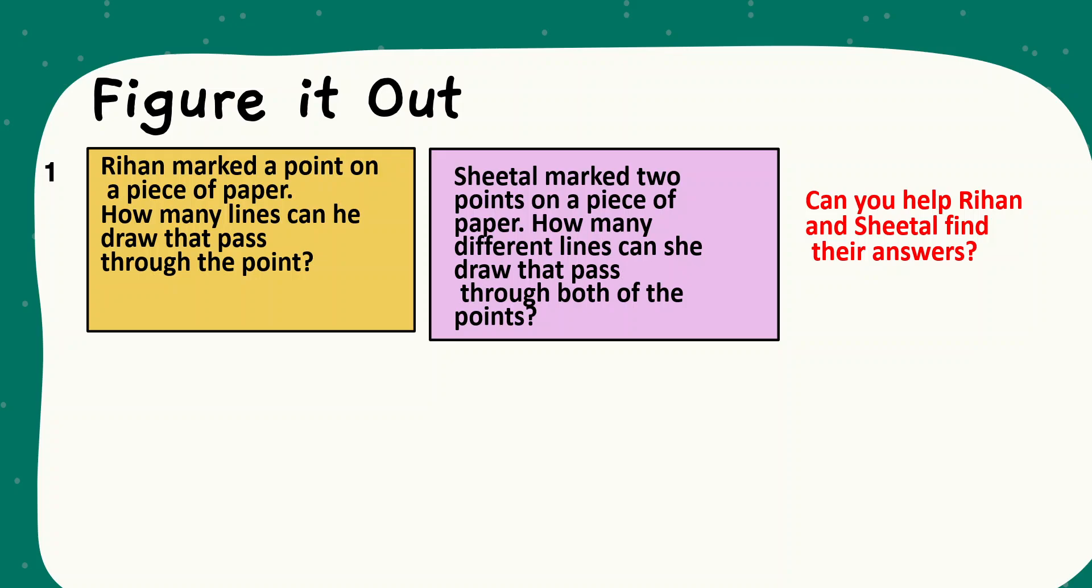Let us solve exercise. Figure it out. Rihan marked a point on a piece of paper. How many lines can you draw that pass through the point? Next, Shirtel marked two points on a piece of paper. How many different lines can she draw that pass through both of the points? Can you help Rihan and Shirtel to find their answers?